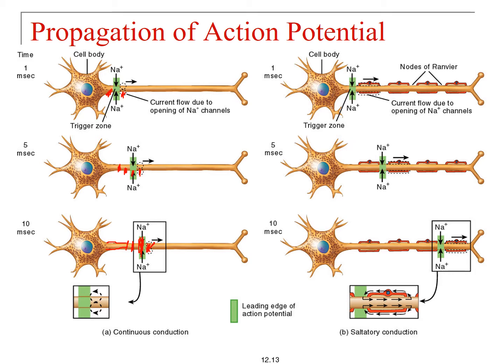Now for saltatory conduction on the right — notice that there are myelinating cells and nodes of Ranvier. You have sodium inflow at a node, and that sodium diffuses underneath the myelinating cell very quickly. At five milliseconds, you've reached the next node of Ranvier, where sodium flows in again and then flows up underneath your myelinating cells. This current flow leads to the next node of Ranvier reaching threshold and having sodium inflow, which then diffuses down to the next node.